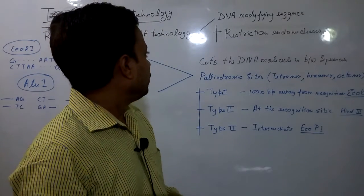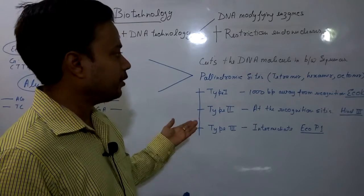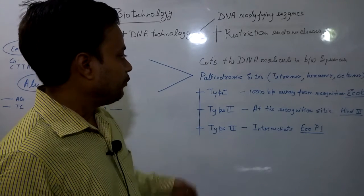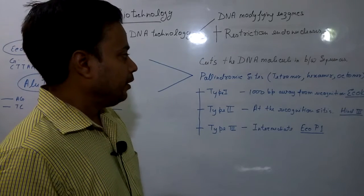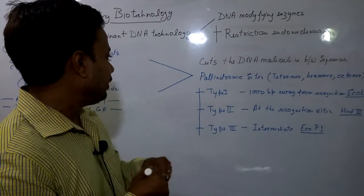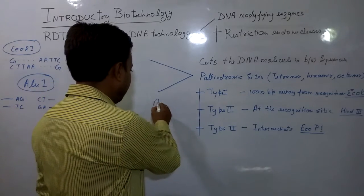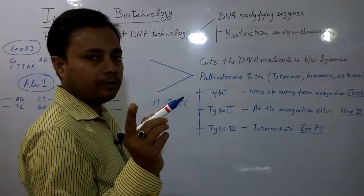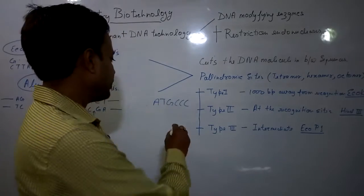On the basis of their cutting ability and recognition sites, restriction endonucleases are of three types. Type 1 enzymes cut DNA 1000 base pairs away from the actual recognition site. For example, EcoKI — if the palindromic recognition site is present, this type of restriction endonuclease tends to cut 1000 base pairs away from that recognition site.